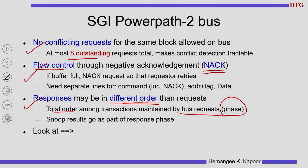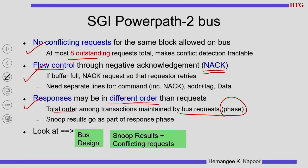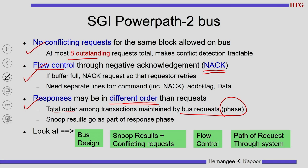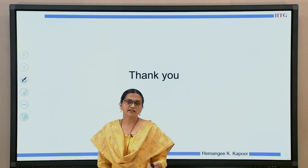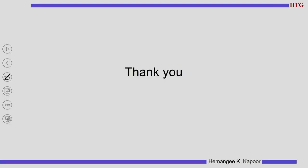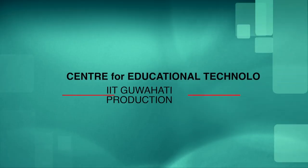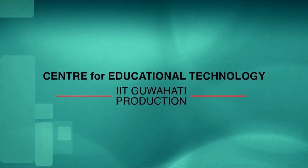In the next steps, we are going to look at the bus design, then the snoop results and how to handle conflicting requests, then the flow control, and lastly an example of the path of a request through the whole system. We are going to see all these topics in the next lecture. Thank you.